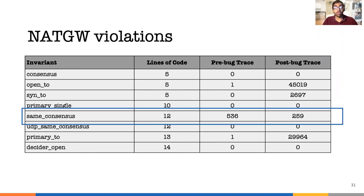Common between the two versions are violations for mostly one invariant, same consensus, which tracks whether flows are closed properly. Some violations here are actually expected, as the system is designed to be eventually consistent. As long as the number is not too high, the system can tolerate these inconsistencies. This is a useful feature of Aragog — it not only tells you whether there is a violation, but also the frequency and whether it violates the SLO.